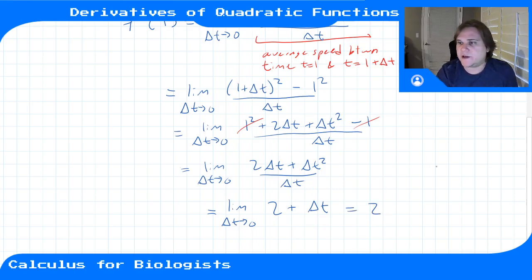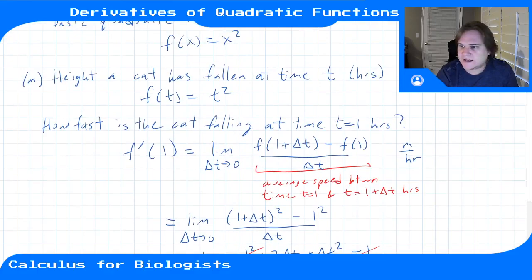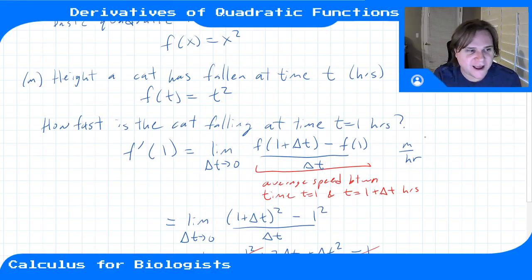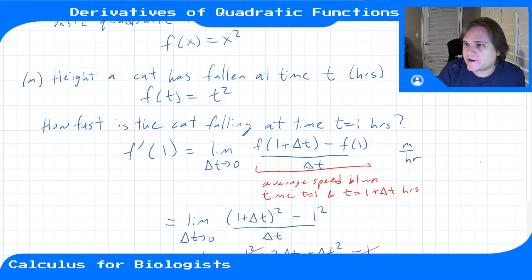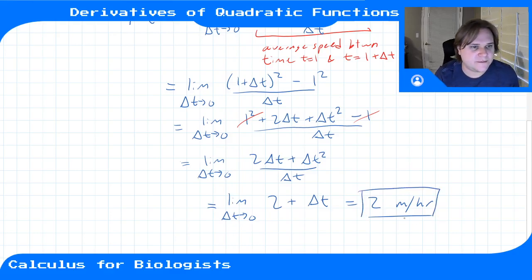Now we can plug in delta t = 0 since we're not dividing by zero anymore, so we get 2. The units of our average speed would be meters per hour. I'm realizing I should have made this seconds or something, but I said hours so they're hours — he's falling extremely slowly, in some sort of strange gravity. So meters per hour are the units. That is the cat's speed at time 1, so f'(1) = 2.